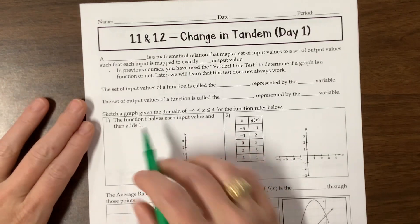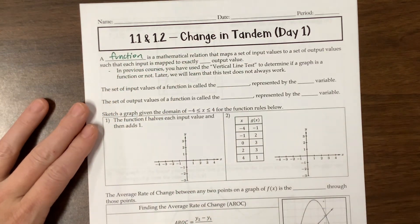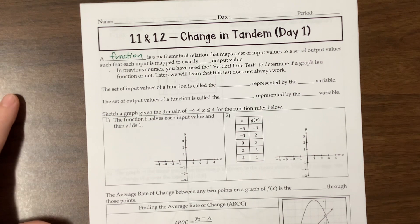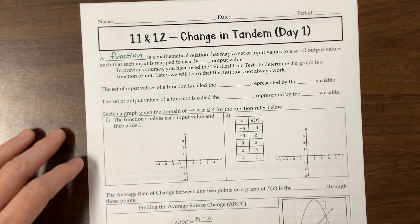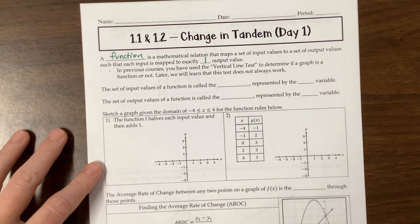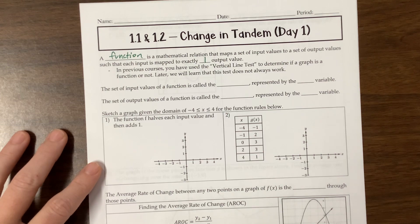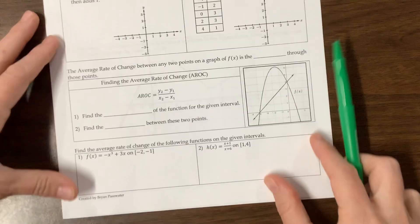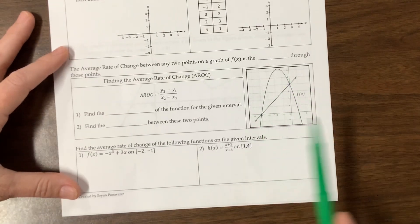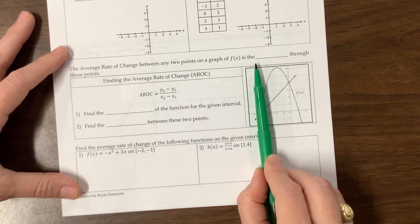So to begin with here, a function is a mathematical relation that maps a set of input values to a set of output values such that each input is mapped to exactly one output value. And it says in previous courses you will have used the vertical line test to determine if a graph is a function or not. For example, down here with this parabola, we'd pass the vertical line, and if it hits the parabola exactly once, then it is a function.